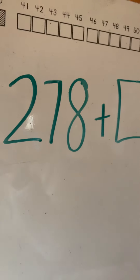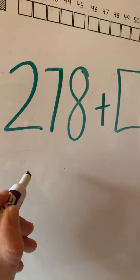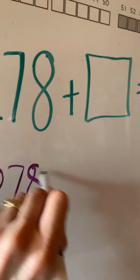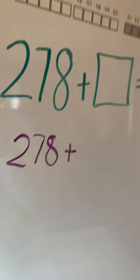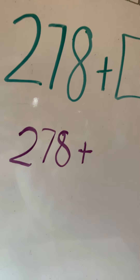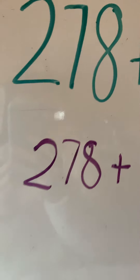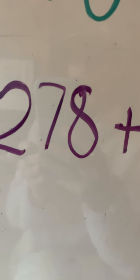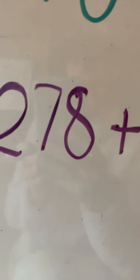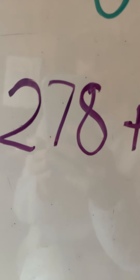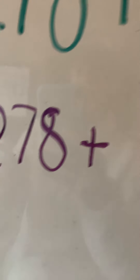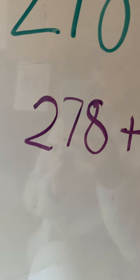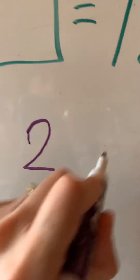So we're going to practice that today and you can follow along with me if you like. 278 plus what gives you the next 10? Let's look closely at the tens — it's 78. So how many will you add to 8 to get to 80? That's right, 2. So we'll add 2 to 278 and we will get 280.